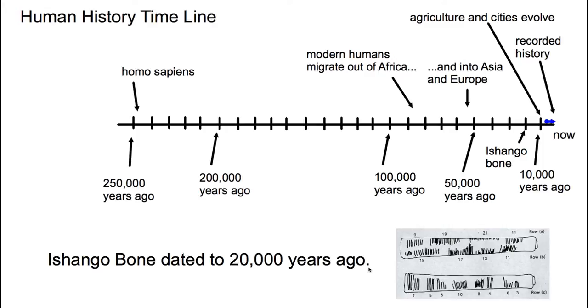This is a timeline of human history. The Homo sapiens species to which we belong is dated to about 250,000 years ago. Each increment you see here on this timeline is about 10,000 years. Recorded history is about 5,000 years. The Ishango bone was found in Central Africa. It's about 20,000 years old. It has markings that look like some kind of intentional counting, calculation.